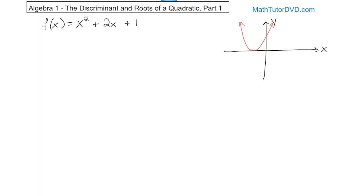Just because this quadratic has shifted up a little bit, it doesn't actually cross in two places — it only touches in one place. So let's find the roots. We do that by saying x squared plus 2x plus 1 is equal to zero. Essentially we're setting this function equal to zero, which means we're finding the point or points where f of x is equal to zero.